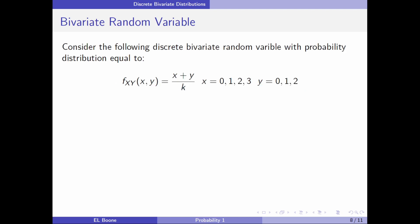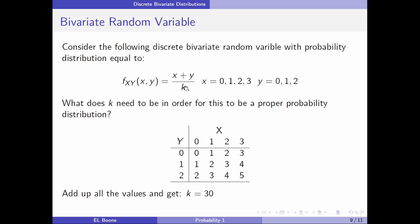Now let's look at one that might be represented with a formula. Consider the following discrete bivariate random variable with probability distribution equal to f_XY(x, y) = (x + y) / k, where x = 0, 1, 2, 3 and y = 0, 1, 2. What does k need to be in order for this to be a proper probability distribution? We would have to add up all of the possible values of the numerator, and then we will get what the denominator needs to be in order for this thing to total up to one.